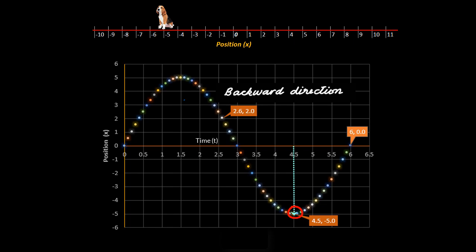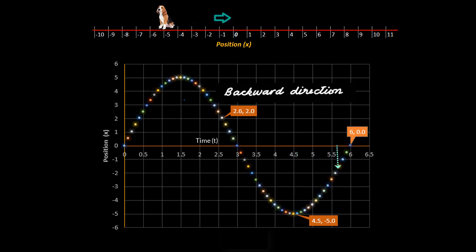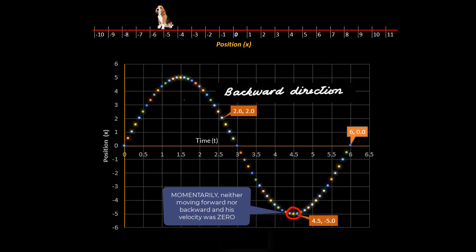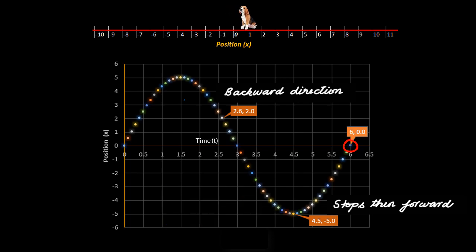At t equal to 4.5 seconds, where Tic Tac is at the minus 5 meter mark, he stops moving backward because x is not reducing any further. Then he starts moving in the forward direction — towards the right — because x is now moving towards the origin. Therefore, at t equal to 4.5 seconds, he was momentarily neither moving forward nor backward and his velocity was 0. He changed direction from backward to forward. Then he is again at the origin, and as we move ahead in time, x increases and becomes more positive, so he is moving in the forward direction.